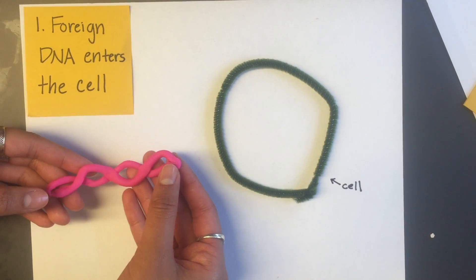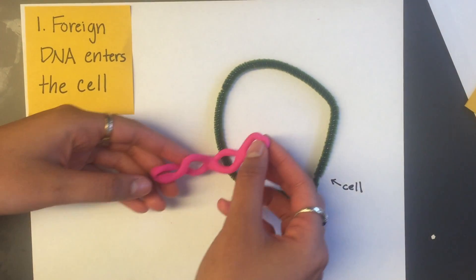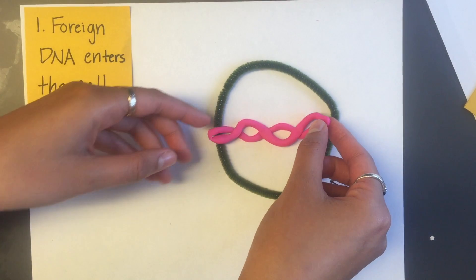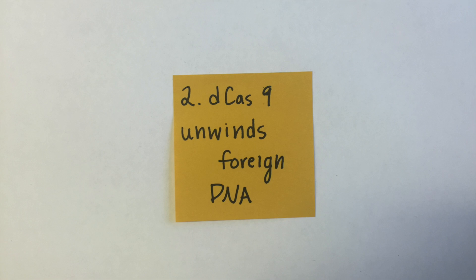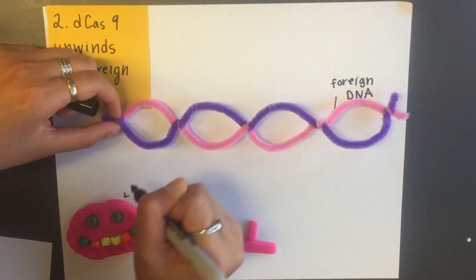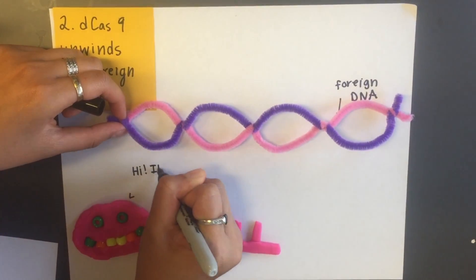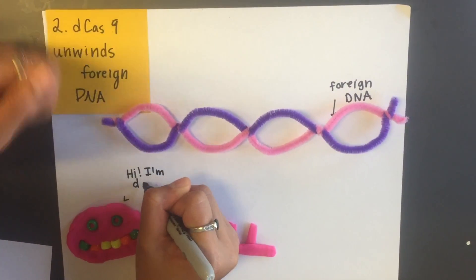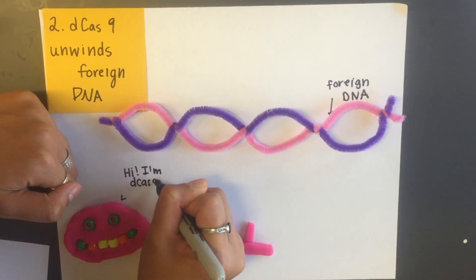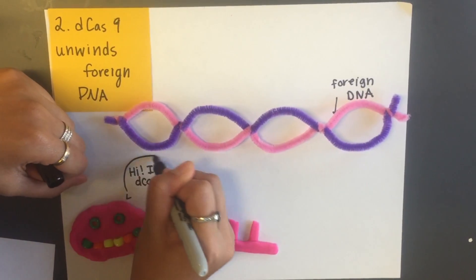First, foreign DNA enters the cell, then D-Cas9 enters the scene. D-Cas9 is basically the enzyme Cas9, except it can no longer cleave DNA as it normally would.